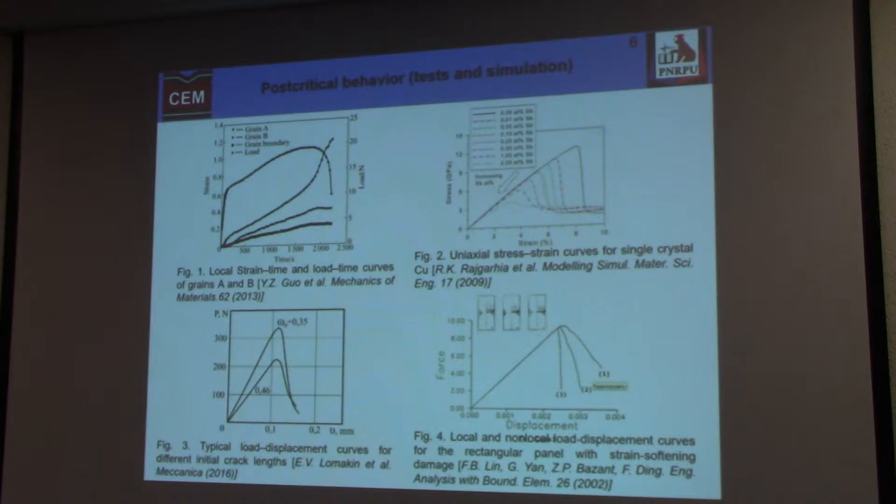In literature, you can find a lot of examples of post-critical behavior in tests, in mechanical tests, in simulation tests and for different levels. For example, test results for grains, simulation for crystals of copper, test results of samples with initial crack blends, and simulation of post-critical behavior of the structure.